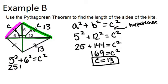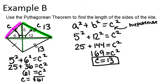25 plus 36 equals C squared. So that means 61 equals C squared, and C equals the square root of 61. So that would be the missing side for here, and also for here.